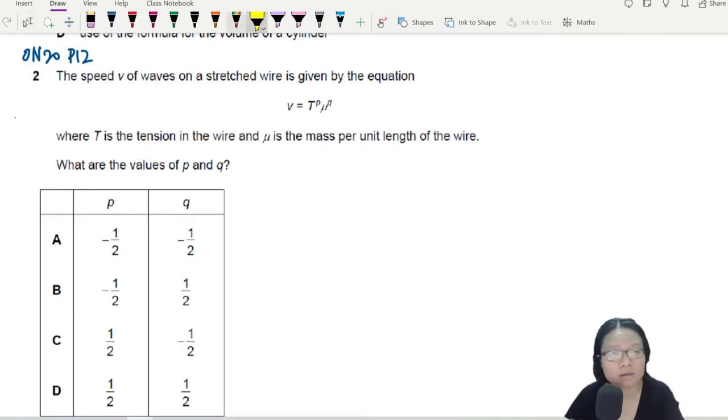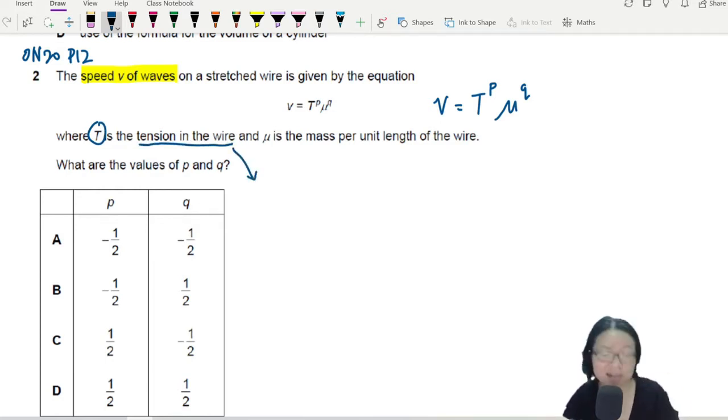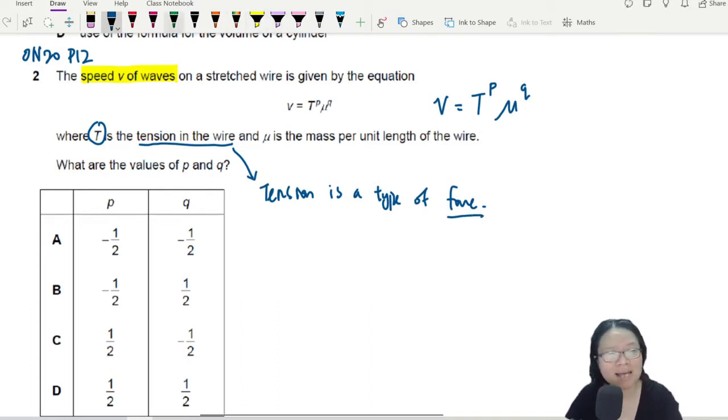So here, once again, we are at the speed of the waves on a stretched wire given by this equation. You cannot see the equation because the term is very small. I'll write for you. V is equal to T to the power of P and mu to the power of Q. So what's T? The question will always tell you. T is tension in the wire. For those who may or may not know this, tension is a type of force. And because it's a type of force, the base SI unit is the same base SI unit for force.